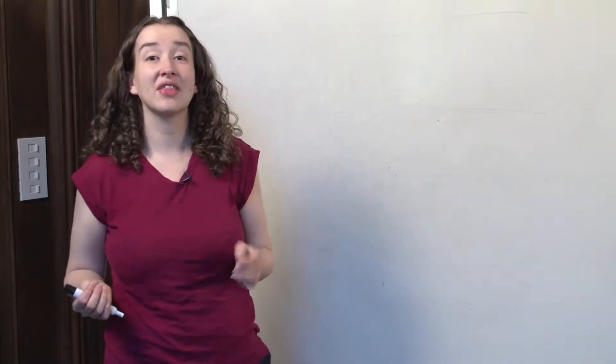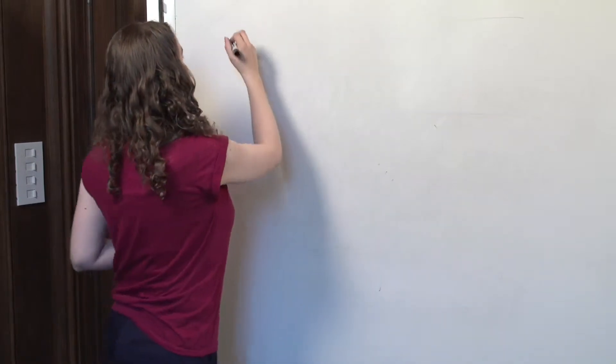We're headed toward demonstrating that s squared is unbiased for sigma squared. In other words, we're trying to justify that pesky n minus 1 in the denominator of s squared. We're getting there.